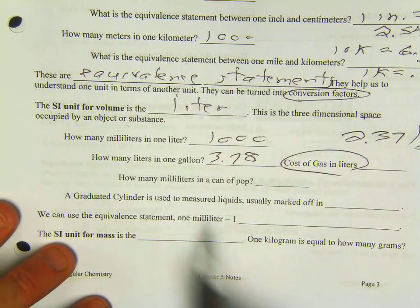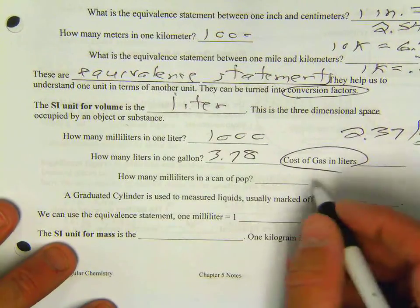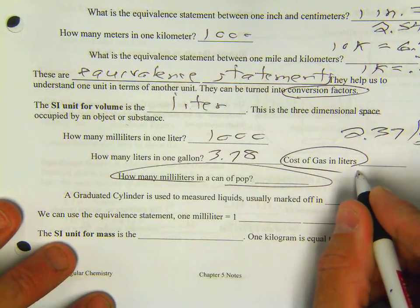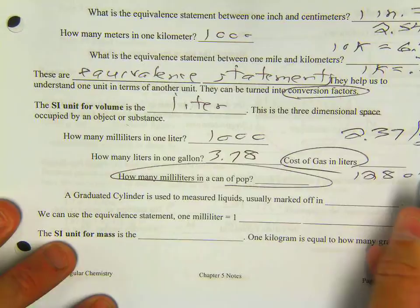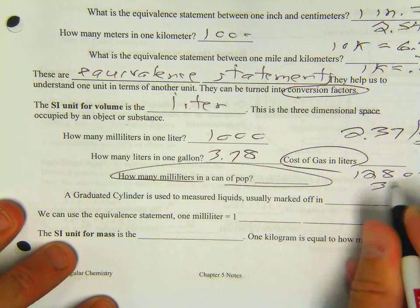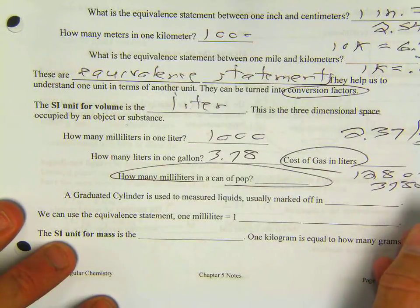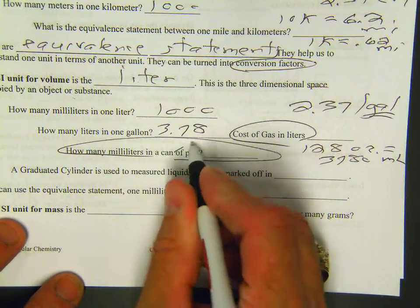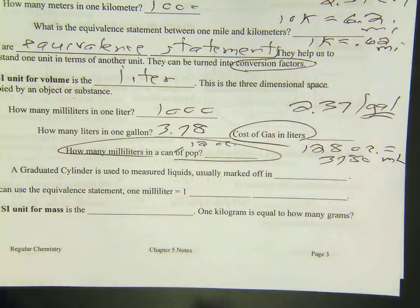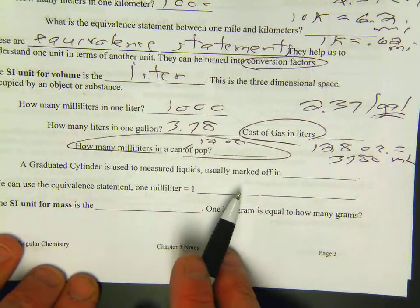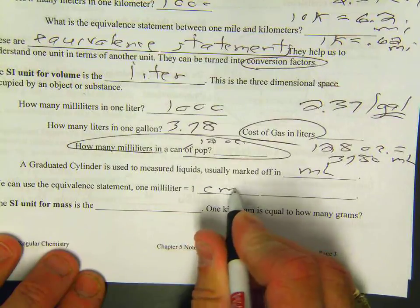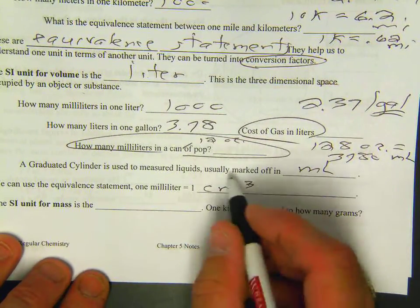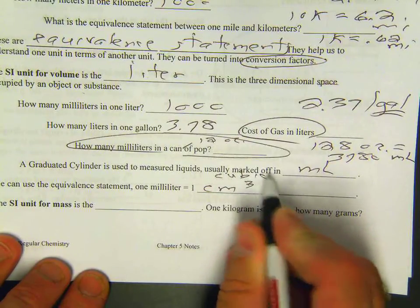How many ounces? Let's see. 16 ounces or 128 ounces equals 3780 mLs. So there's your equivalent statement and one can of pop would be 12 ounces. So I'll let you work on that on your own. A graduated cylinder is used to measure liquids usually marked off in mLs. We can use the equivalent statement one mL equals one cubic centimeter. This is cubic by the way if I wrote it in words, centimeter.